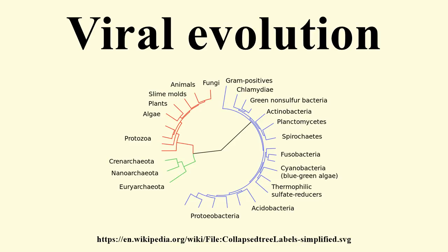One of the problems for those studying viral origins and evolution is their high rate of mutation, particularly the case in RNA retroviruses like HIV-AIDS. A recent study based on comparisons of viral protein folding structures is offering some new evidence. Fold superfamilies are proteins that show similar folding structures independent of the actual sequence of amino acids, and have been found to show evidence of viral phylogeny.